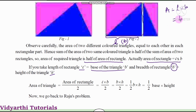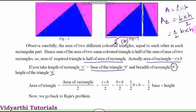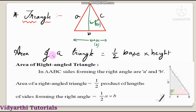So, base corresponds to length and height corresponds to breadth. Therefore, area of the triangle is equal to 1/2 × base × height, that is ½ BH. So, area of the triangle is equal to half base into height. This is the triangle area formula we derived.